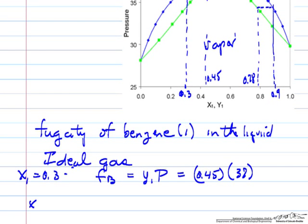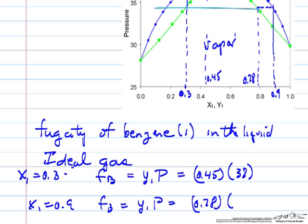And for x1 equals 0.9, fugacity would be likewise, y1 at the different condition, different pressure. y1 is 0.78, and the pressure is about 34.